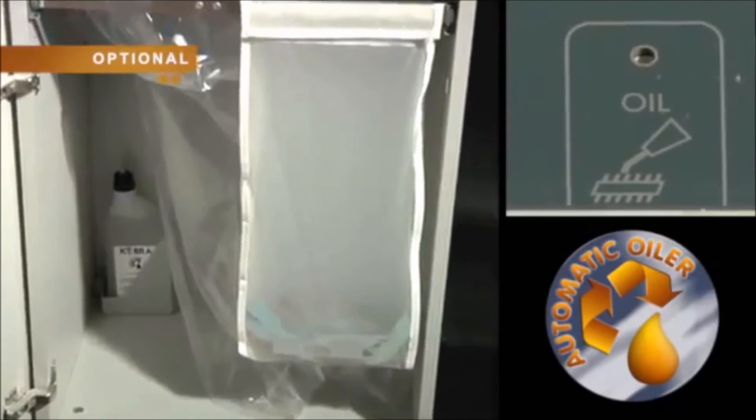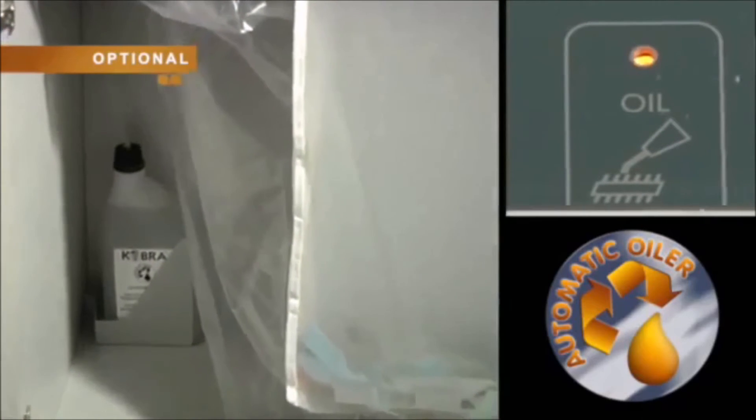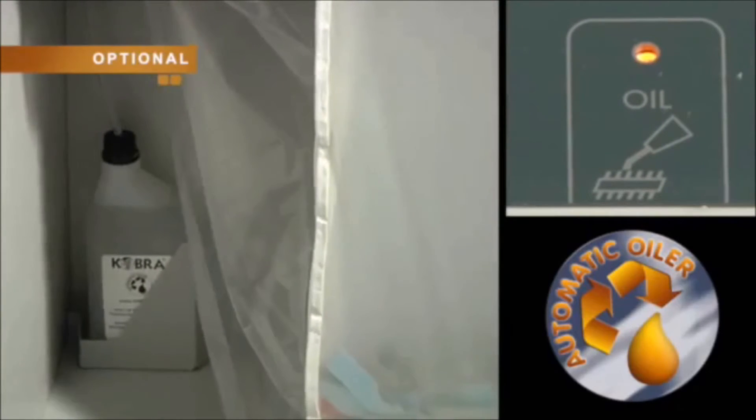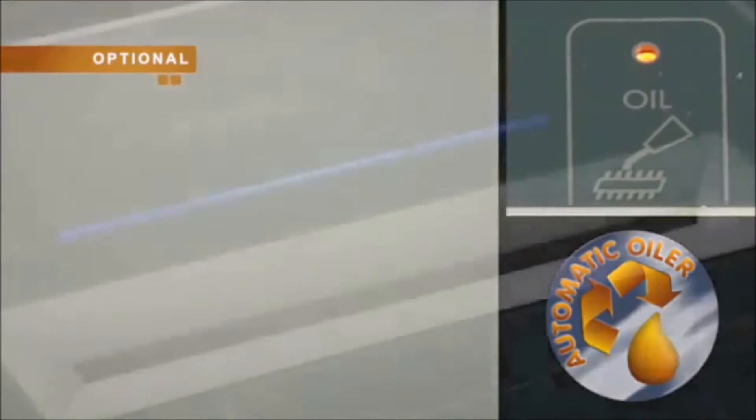Once the oil bottle is empty, an illuminated optical signal warns about the need to replace the bottle inside the cabinet.